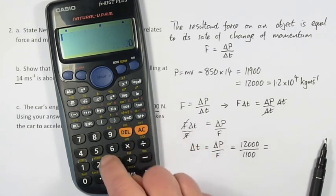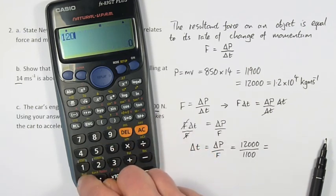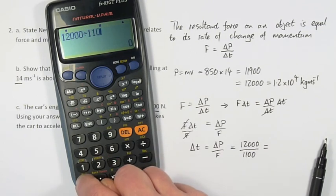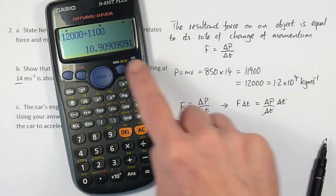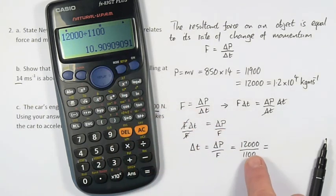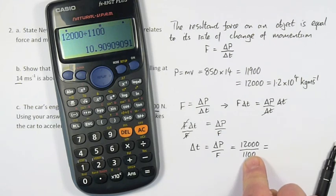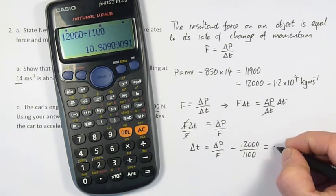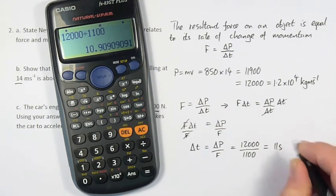We need to calculate that one. So 12,000 divided by 1,100. The answer is given to many decimal places but all of our numbers are given to two significant figures. So I will give this to two significant figures which is 11 seconds.